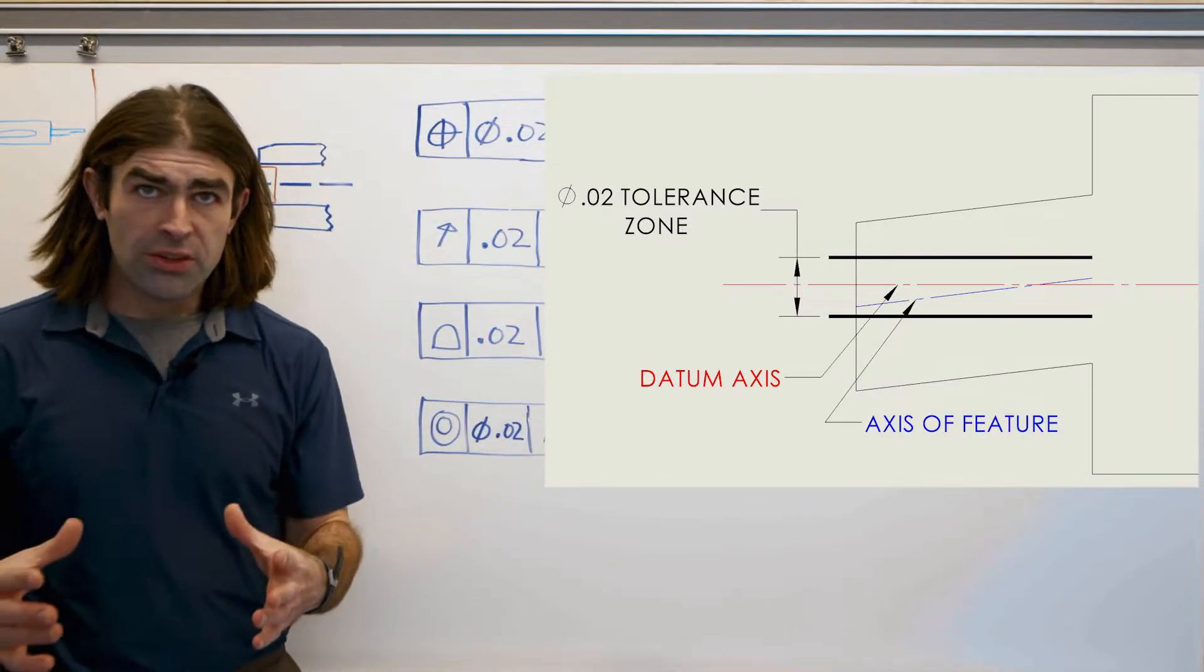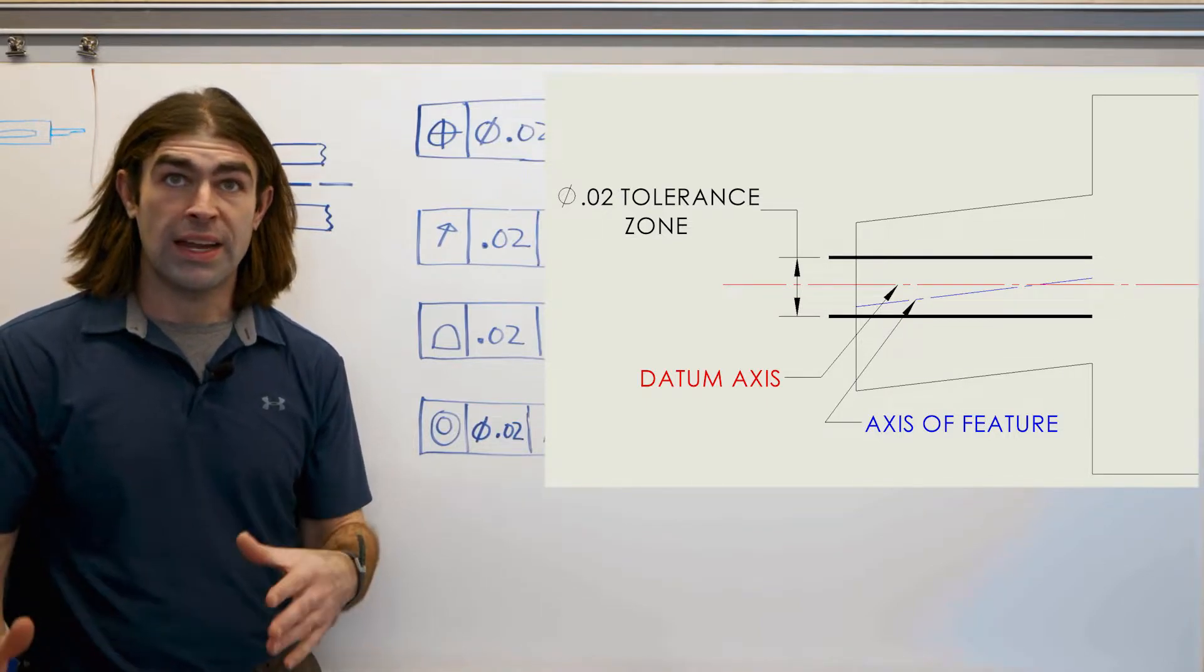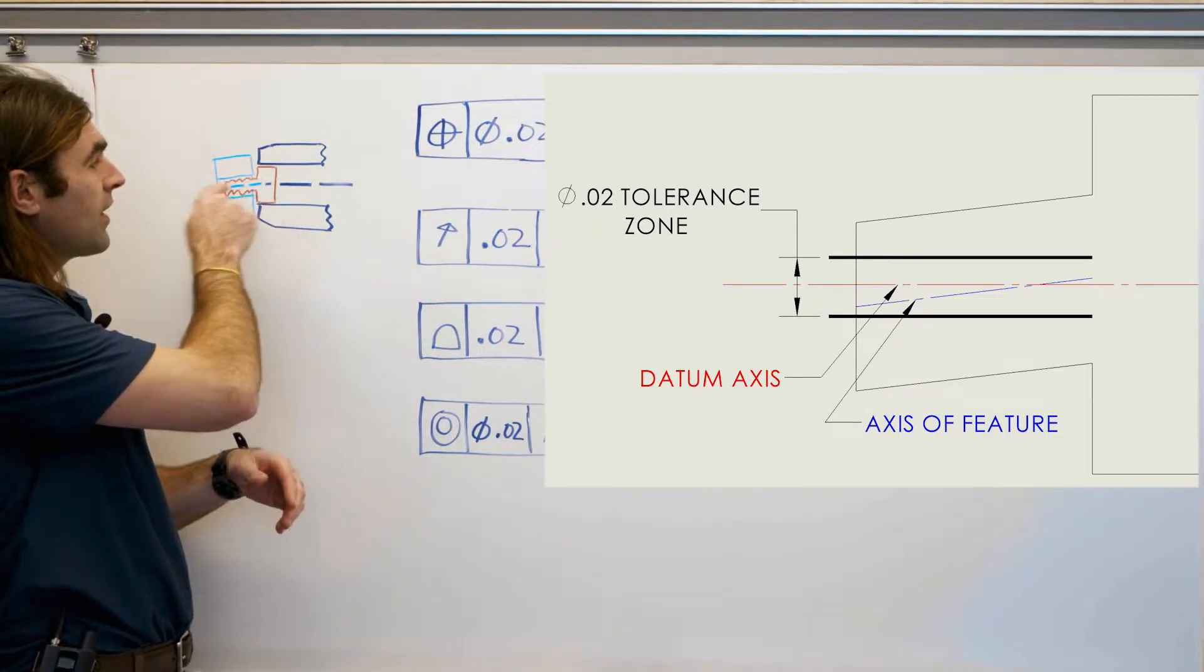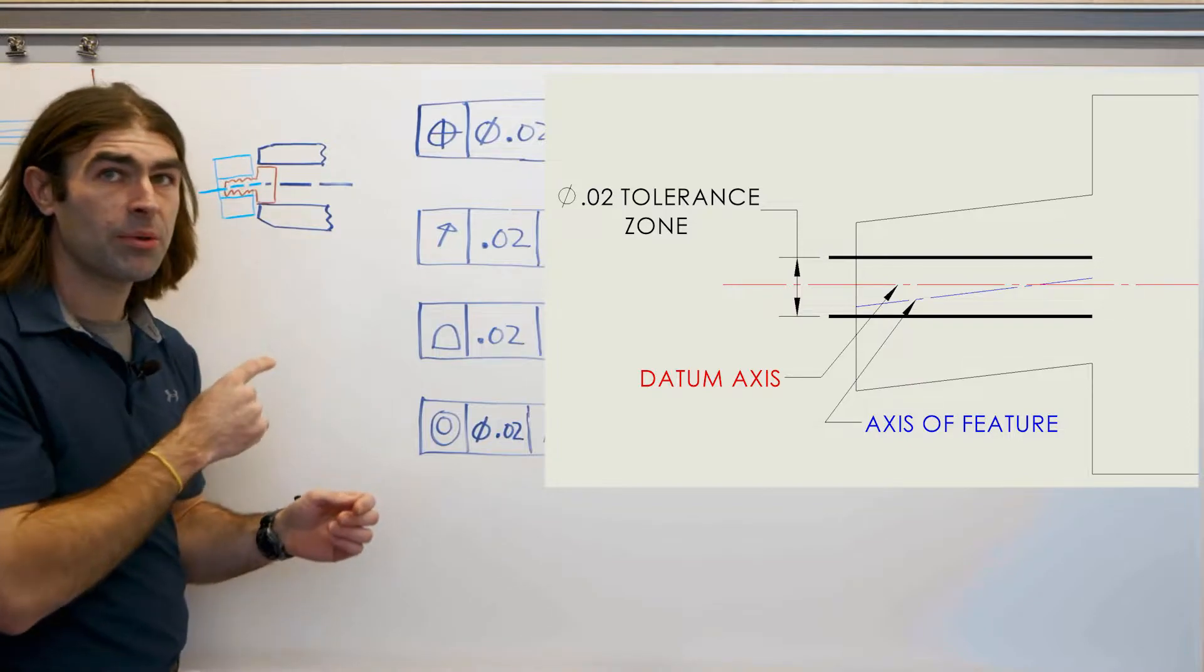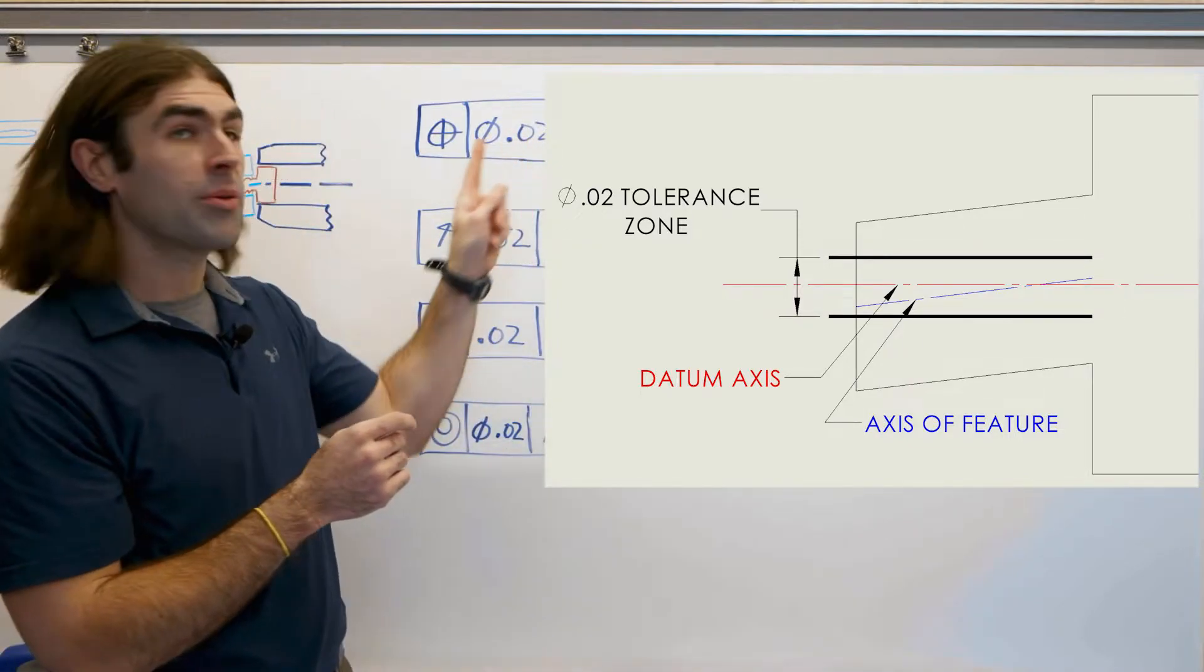The axis of that inspection equipment is the axis of this feature. So position takes into account high points to give you an axis. Now you find out if this axis of the inspection equipment and the diameter is within a tolerance zone that's acceptable here.